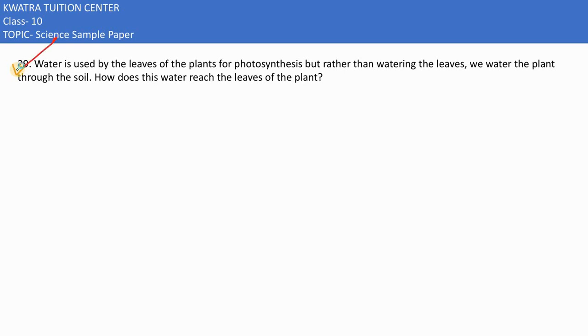Here in the 29th part it is given that water is used by the leaves of the plants for photosynthesis. But rather than watering the leaves, we water the plant through the soil. Why is this? Why do we put the water in the soil? How does this water reach the leaves of the plants?